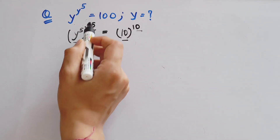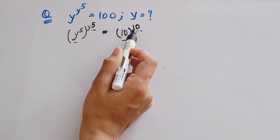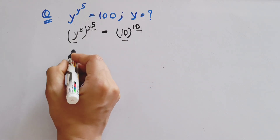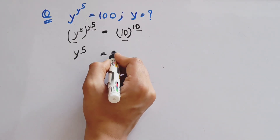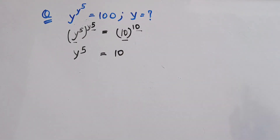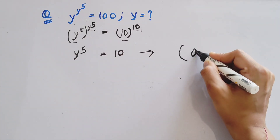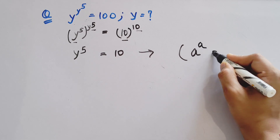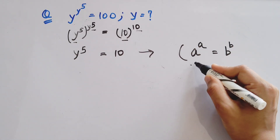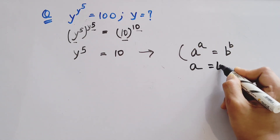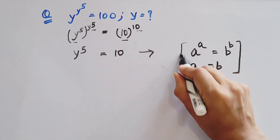We have the same base and same power, so we will equate the powers. So y to the power 5 equals to 10. Here we use the rule: if a to the power a equals to b to the power b, then we can write a equals to b.